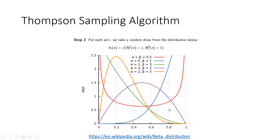Thompson sampling is not a deterministic algorithm — it is a probabilistic algorithm. Therefore, we are going to end up creating distributions. These distributions will be based on the beta distribution using two parameters, but we are going to talk more about that when we implement it. In this video, we are going to go through the intuition of the Thompson sampling algorithm.